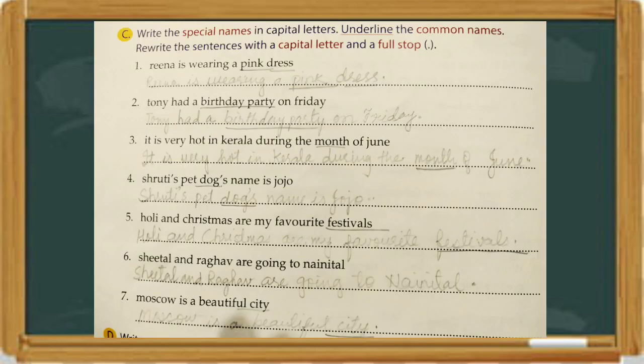Now, turn your page and let's learn the next thing. Here you will have to write special names in capital letters and underline the common names. You will have to rewrite the sentences with a capital letter and a full stop. So: Rina is wearing a pink dress. Rina is a special name, so you have to write R capital. And pink dress is a common name, so you will have to underline pink dress.